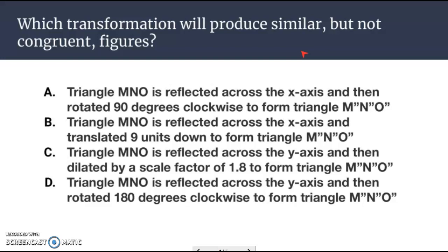All the other transformations just basically keep it the same. It may be reflected, it may be translated, it may be rotated. But dilation is the only one that produces similar but not congruent figures. So looking at these three scenarios here, A, triangle MNO is reflected across the x-axis and then rotated 90 degrees clockwise to form triangle M'N'O".